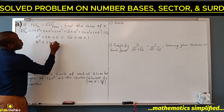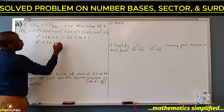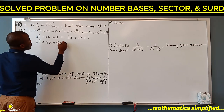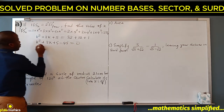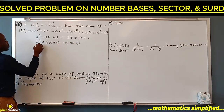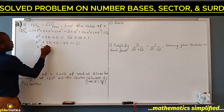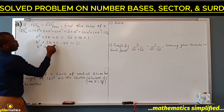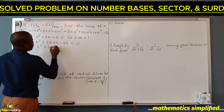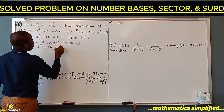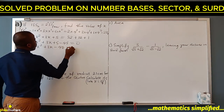Subtracting 45 from both sides: k squared plus 3k plus 5 minus 45 equals 0, which gives k squared plus 3k minus 40 equals 0.